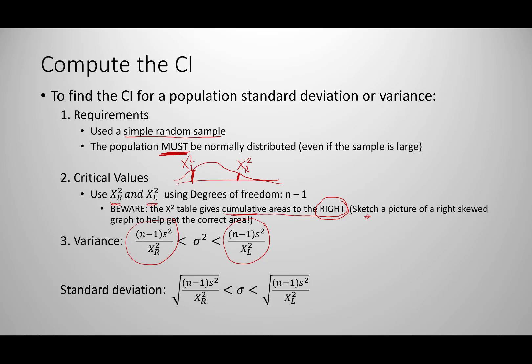For the lower limit of the variance confidence interval, take n minus 1 times s-squared and divide by the chi-squared right value. For the upper limit, take n minus 1 times s-squared and divide by the chi-squared left value. The symbol in the center represents the population variance. For the standard deviation confidence interval, the process is exactly the same but you take the square root of each of those values, since standard deviation is the square root of variance.